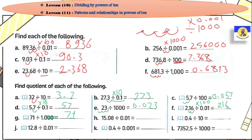15.08 divided by 0.01: it means multiplied by 100. So move one, two. So it will be 1508. The next: 0.4 divided by 0.01 — it means multiplied by 100. So it will be 1280.